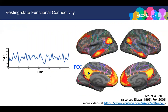For example, if we put a seed in the posterior cingulate cortex, the time course of PCC is shown as a blue line. If we compare the time course of PCC and the time course of region A at angular gyrus shown in red, we can see that the time courses are highly correlated, fluctuating up and down together. The Pearson correlation can reach 0.9.